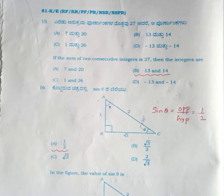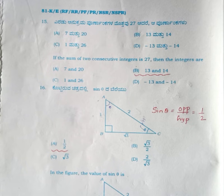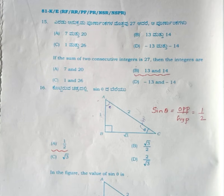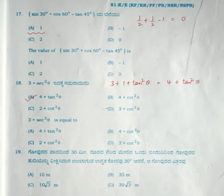For question number 15, a direct and very simple question: 13 plus 14 is 27, therefore the correct answer is option B. For the sixteenth question, sin theta is opposite by hypotenuse, therefore the correct answer is option A, 1 divided by 2. For question number 17, the correct answer is option A, 1. For question number 18, the correct answer is option A, 4 plus tan squared theta.